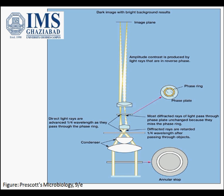This figure shows the phase contrast microscope. There is a condenser which has an annular stopper — an opaque disc with a thin transparent ring — which introduces a hollow cone of light. When this hollow cone of light passes through the specimen, some light rays passing through the cell are bent due to variation in density and refractive index within the specimen, and they are retarded by 1/4 wavelength. These are the diffracted rays.